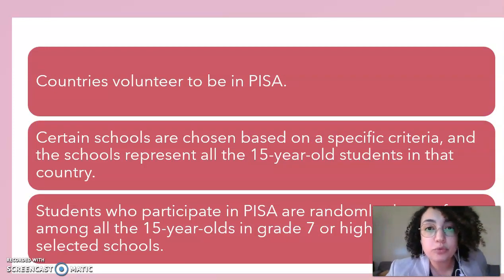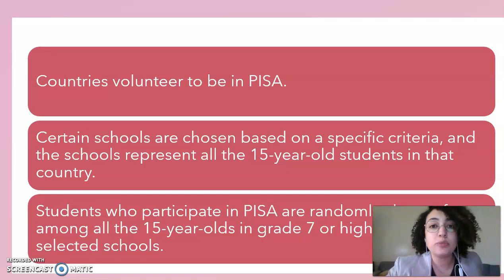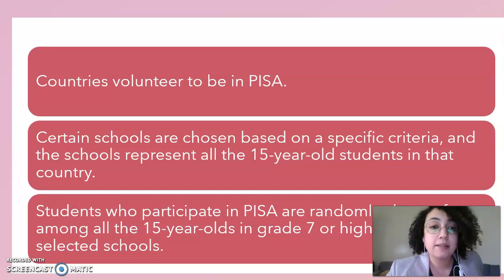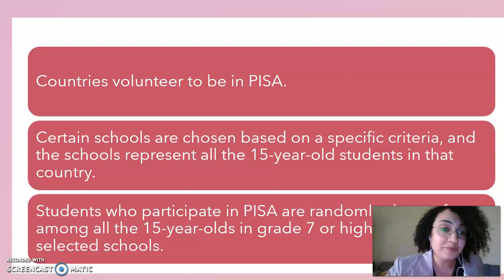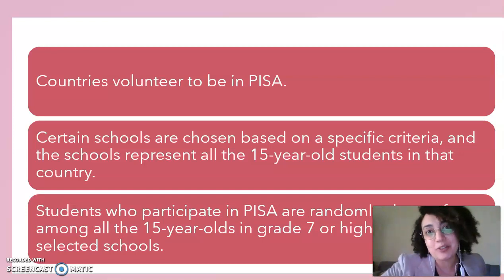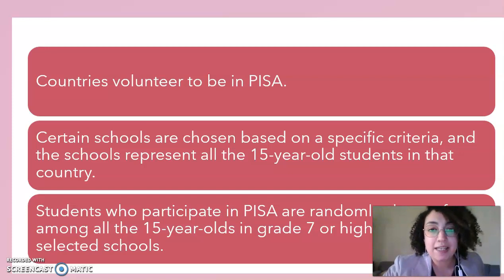If a country wants to join in taking PISA, it has to volunteer to do that. Once it is chosen, certain schools will be selected to take the test, and the schools will represent the 15-year-old population nationwide. Not all students within a selected school participate — only a few randomly chosen 15-year-olds will participate within a school.